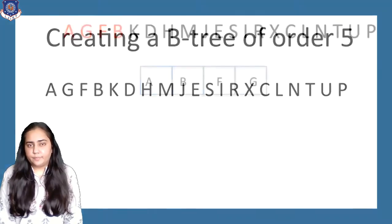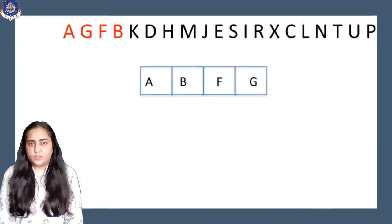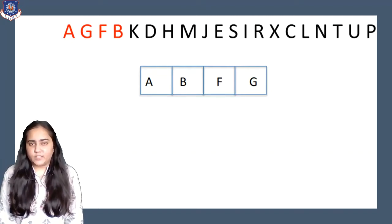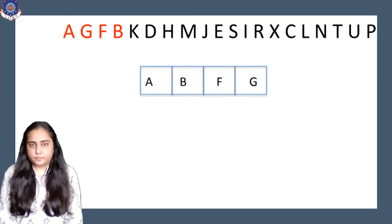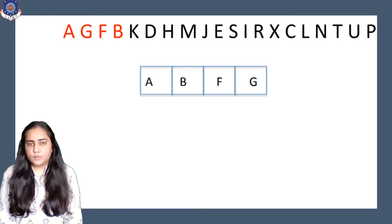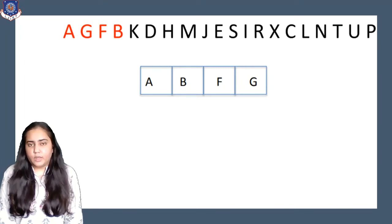When somebody inserts into an SQL table they might keep IDs sorted, but they would not keep names sorted while inserting. So we have to be prepared for any alphabetical order — that's why we are creating a B-tree with letters. First we insert the first four letters. Because it's a B-tree of order 5, I can have a maximum of four keys in one node, so I insert A, B, F, and G in ascending order.